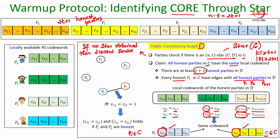We can now say C_11 equals C_i1 and C_11 equals C_j1, meaning the first components of Pi's and Pj's codewords are the same. Likewise the second components are the same, and the (t+1)th components are the same. Recall that if two Reed-Solomon codewords corresponding to a degree-t message encoding polynomial have t+1 or more common components, then the two codewords correspond to the same message. So Pi's and Pj's codewords are the same, which proves the claim: all honest parties in C have the same local codeword.